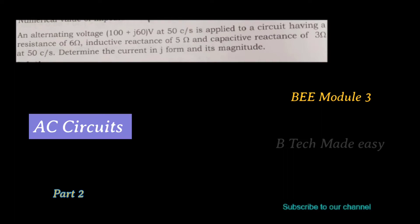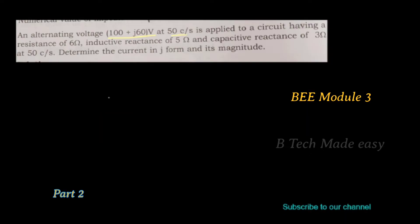An alternating voltage of 100 plus j16 volt — that is the rectangular form — at 50 cycles per second frequency is applied to a circuit having a resistance of 6 ohm, inductive reactance of 5 ohm, and capacitive reactance of 3 ohm.